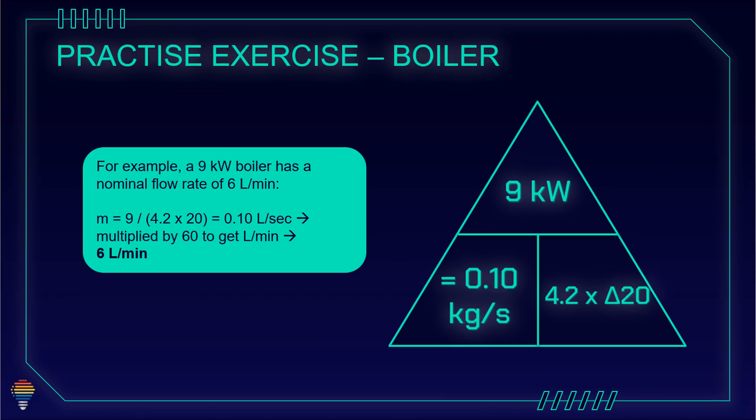If we compare this with delta T 20 on gas boilers, our flow rate will be 0.1 kilograms per second, or about 6 liters per minute. So our flow rate is 4 times slower than in a heat pump system. This means we need to go with bigger pipes to ensure sufficient flow rate, so our heat pump system can operate on a delta T of 5 degrees. This is the most important part of the hydraulic system.